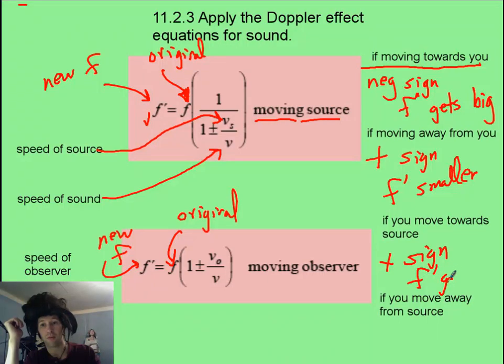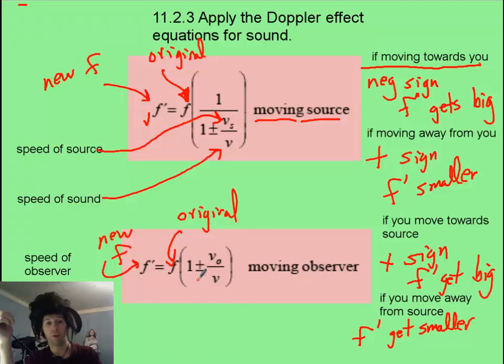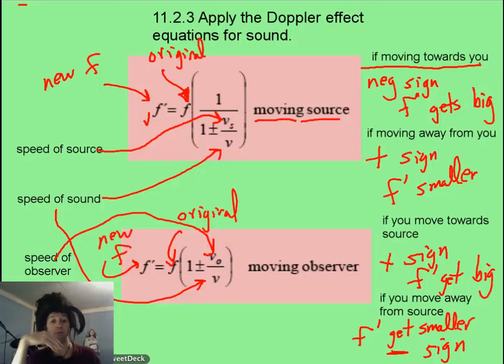And the f prime should get big. If you are moving away from it, you're running away from all those waves, and so they won't hit you as often. So you are going to have f prime getting smaller, and for this equation to become smaller, you will end up subtracting with the negative sign. And hopefully it's obvious that this v on bottom is the speed of sound, and the speed of the observer is that v sub zero.